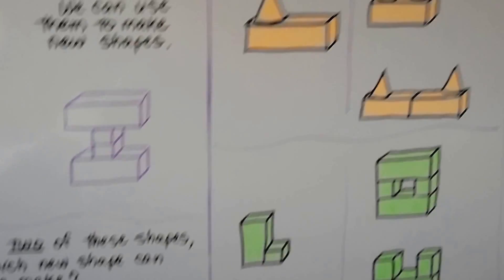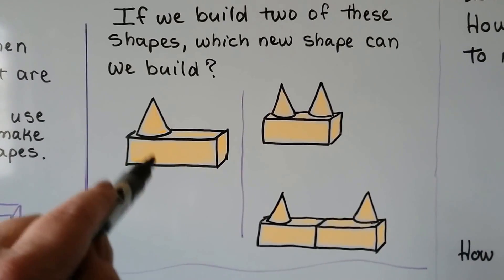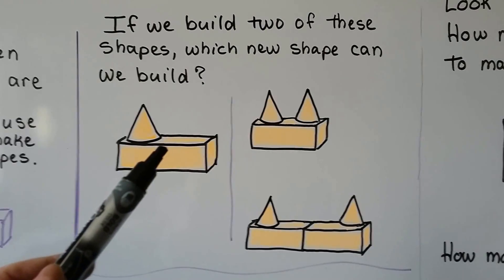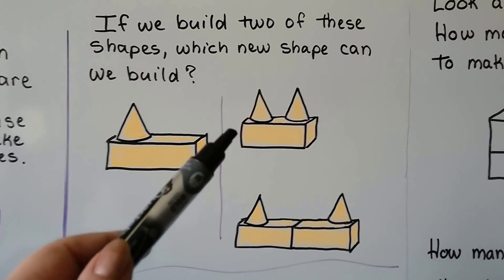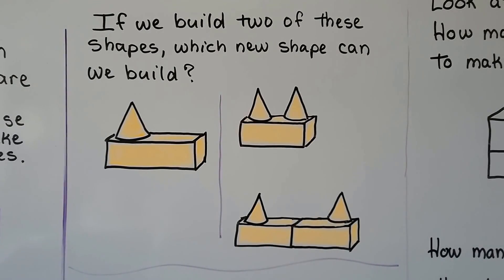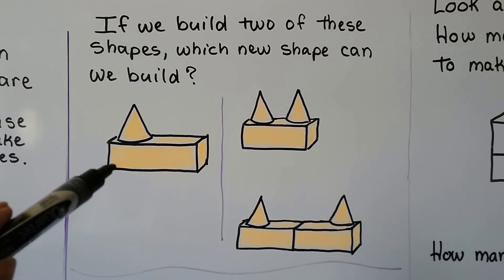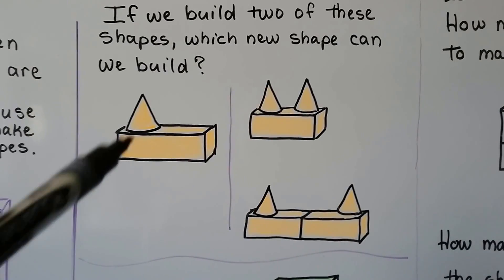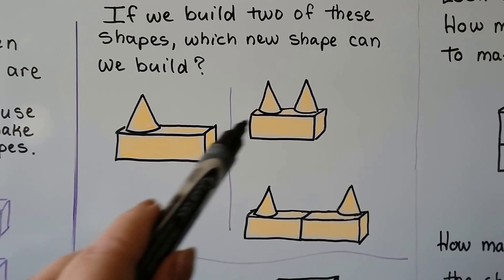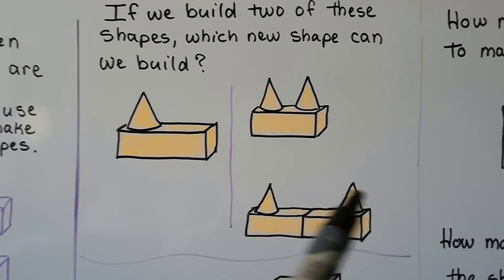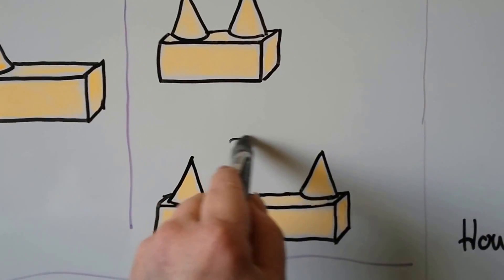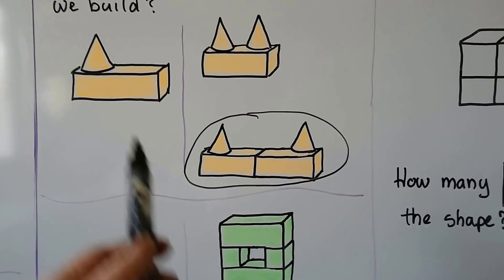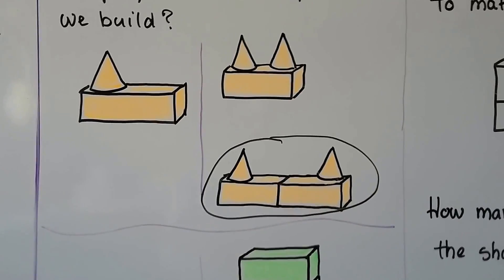Let's try another one. If I built two of these, and we imagine they're glued together — I glued the cone to the rectangular prism — and I made two of them, which shape could we make? If I made two of these, we're going to have a cone stuck to a rectangular prism, and then another cone stuck to a rectangular prism, so we'd have two cones and two rectangular prisms. One option only has one rectangular prism, but the other has two cones and two rectangular prisms, so that would be the one we could make. We would just turn one around so one faces that way and one faces the other way.